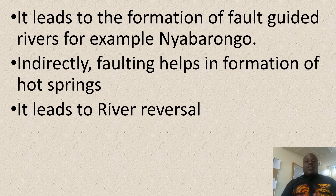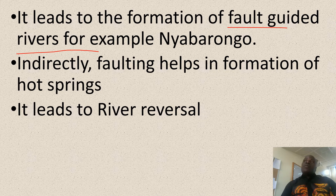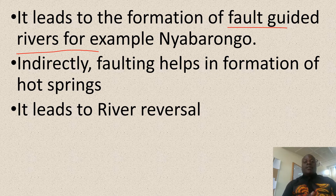Faulting leads to the formation of fault-guided rivers. Remember we looked at fault-guided valleys. So when rivers keep on flowing following the fault-guided valleys, they are called fault-guided rivers. In Rwanda we have rivers like Nyawarongo and Lusizi.